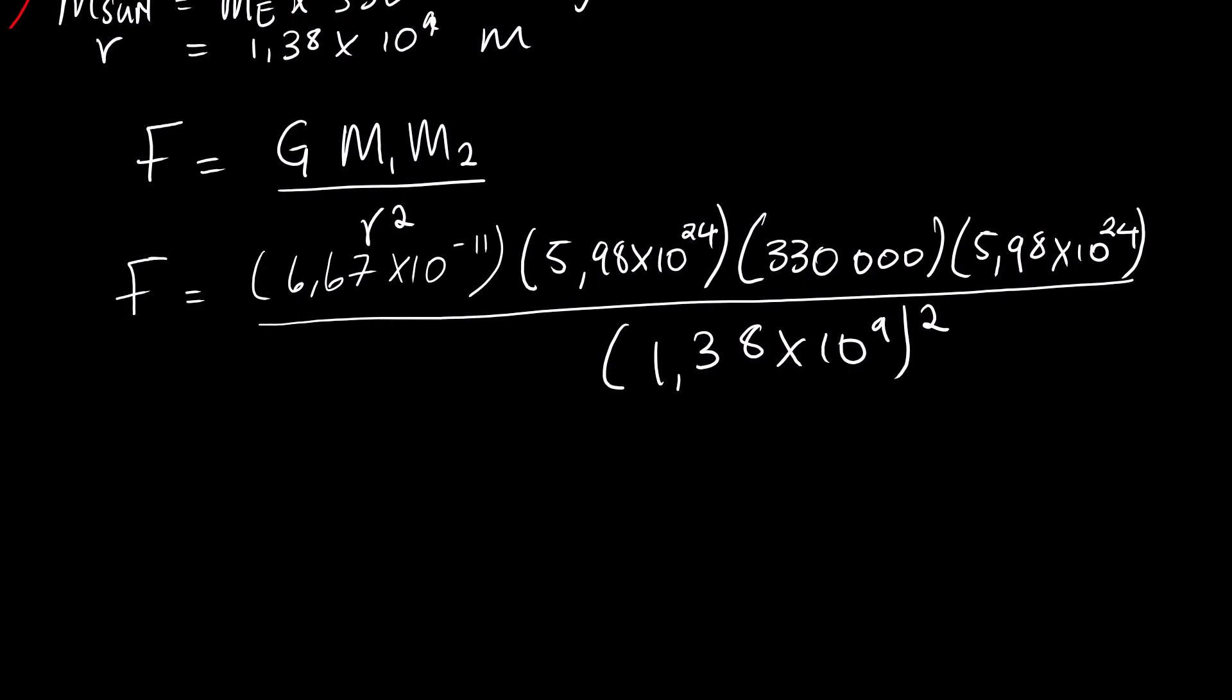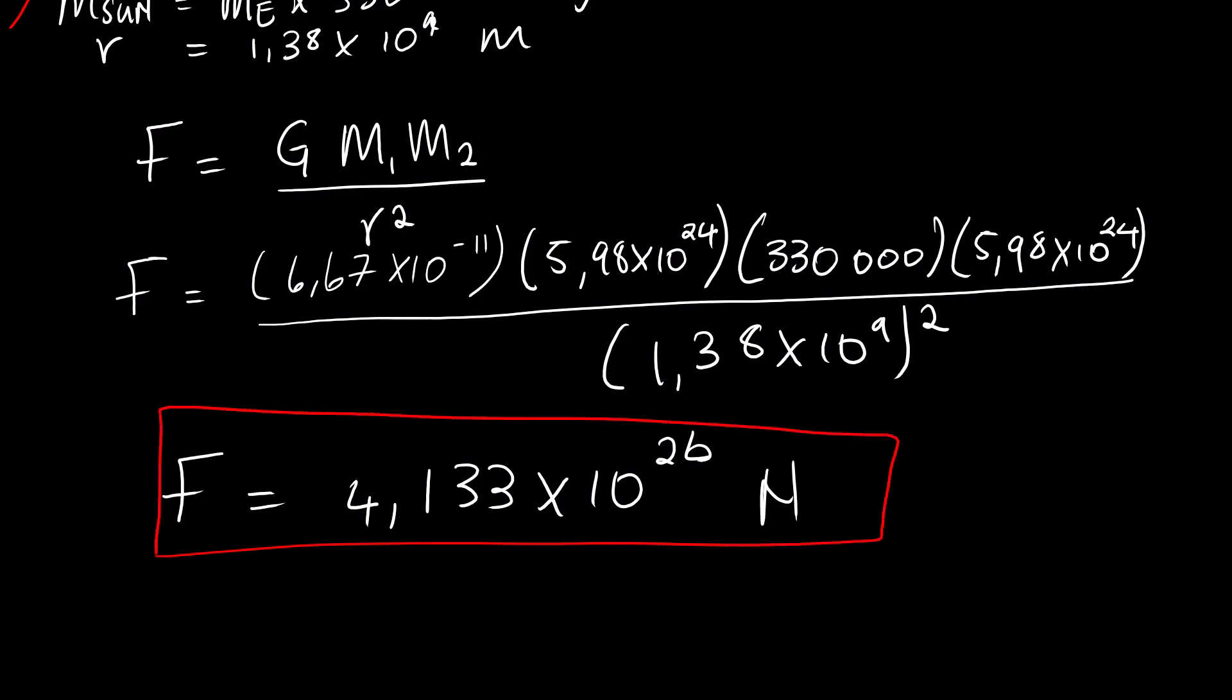Then the gravitational force between the Sun and the Earth is 4.133 times 10 to the power of 26 Newton. We are done with the second question.